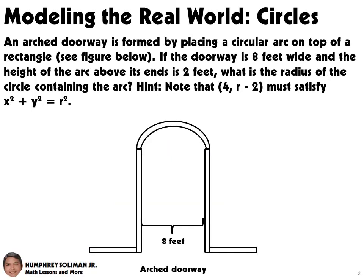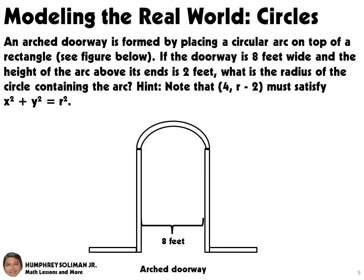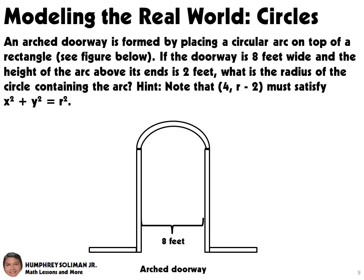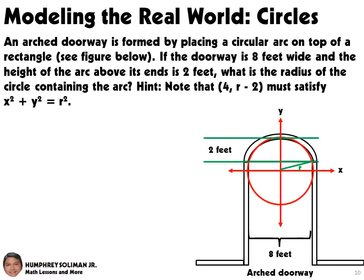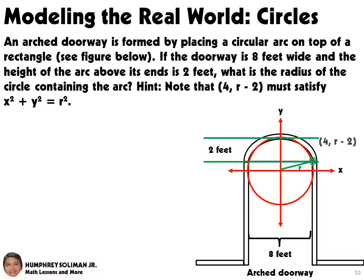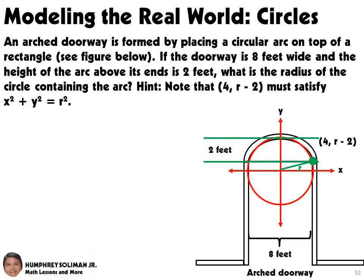Let's have another example. An arched doorway is formed by placing a circular arc on top of a rectangle — see figure below. If the doorway is 8 feet wide and the height of the arc above its ends is 2 feet, what is the radius of the circle containing the arc? In solving this problem, we can use the x and y axes and put the center of the circle at the origin. Then we can use the coordinates of the circular arc in the standard form of equation of a circle to find the radius.